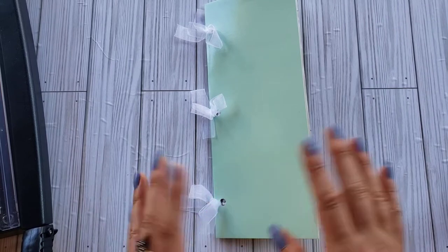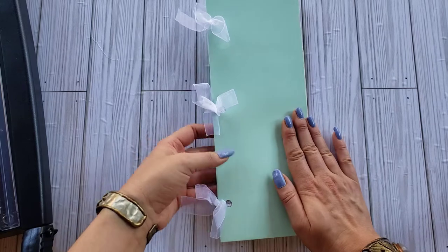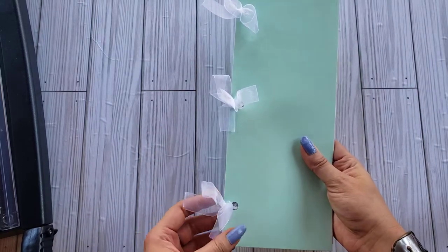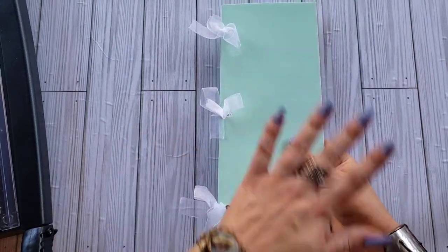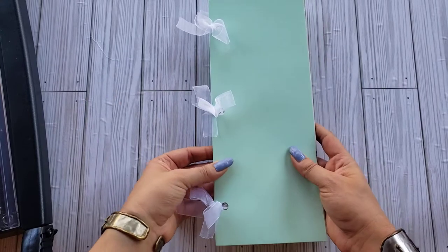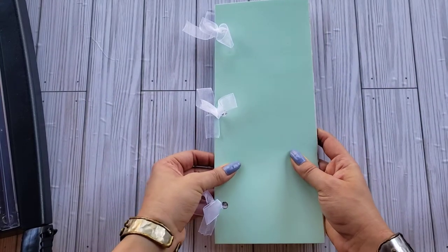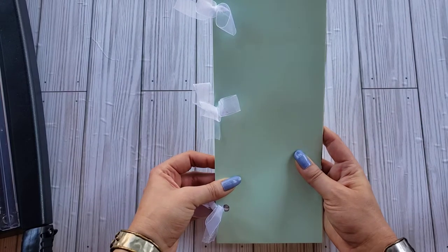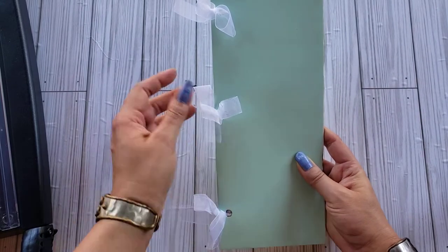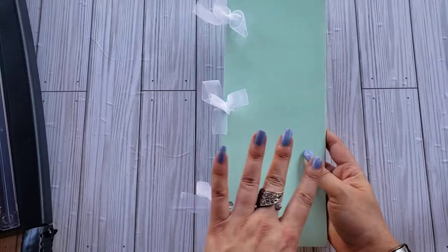Welcome. In this tutorial I'm going to show you how I bound this journal with these pretty little bows. Now you might assume because it is in a three-hole punched binder that all I did was punch holes in my journal signature and loop these ribbons through, but that's not what's going on here.